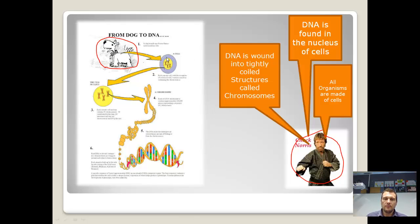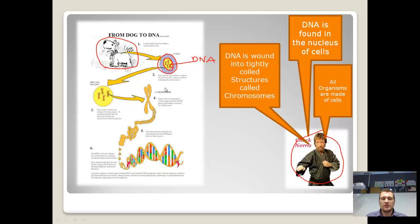Here is a cell — in this case a dog cell — and inside the cell, part of the cell structure, is a structure known as the nucleus. And inside the nucleus is where we find DNA. So every cell in a living thing that has a nucleus contains DNA.